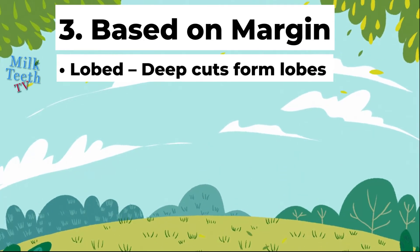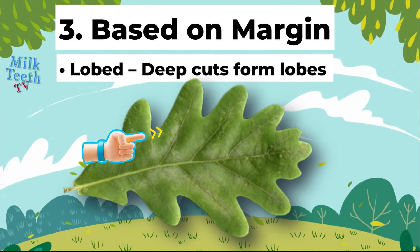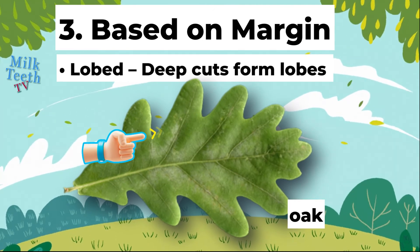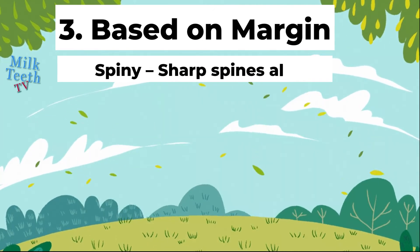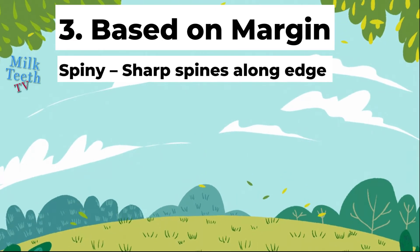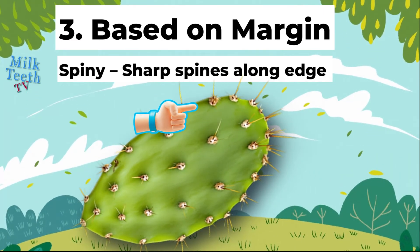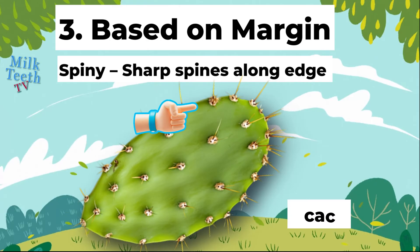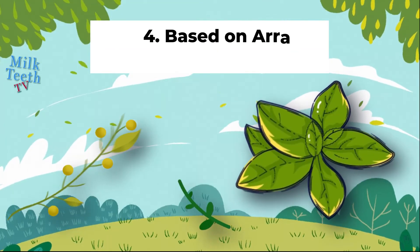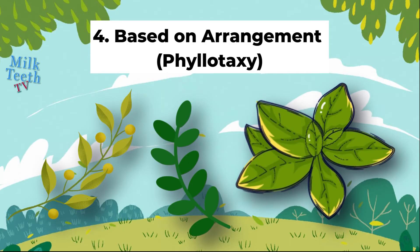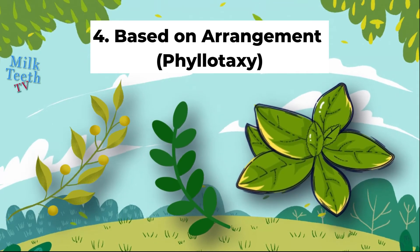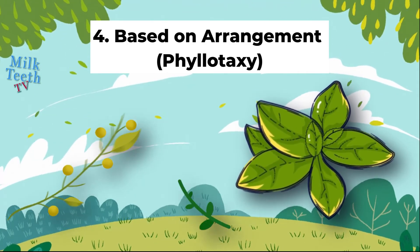Leaves may have a lobed margin with deep cuts formed by lobes, for example oak leaf. Leaves may also have a spiny margin — sharp spines along the edge — for example cactus.